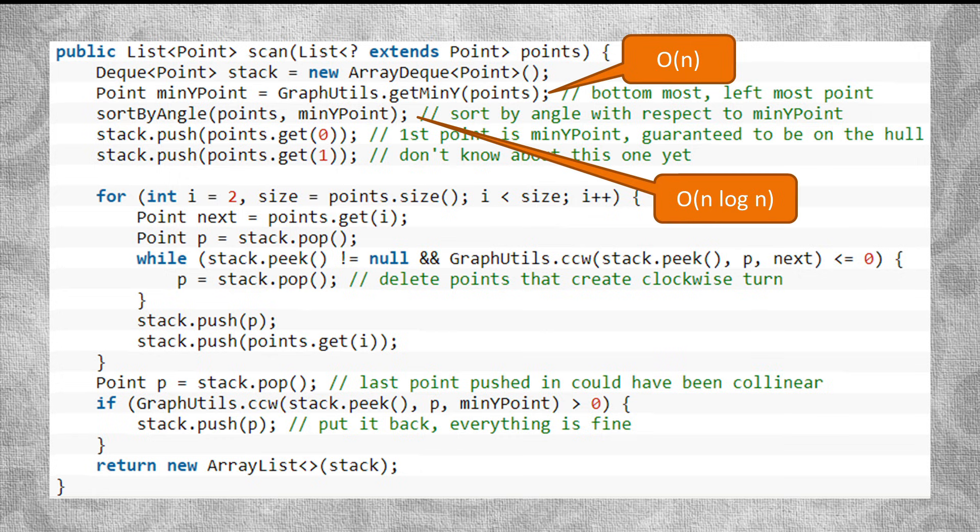Sorting the points in place takes order n log n, while the main algorithm takes another order n number of operations, since each point is pushed and popped off of the stack at most once. Therefore, the overall running time of Graham Scan is order n log n, driven by the sort phase.